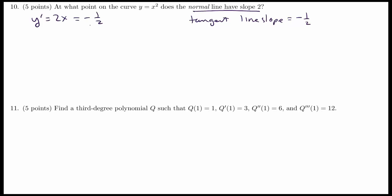2x equal negative 1/2? Well, let's divide both sides by 2. That's going to be when x is equal to negative 1/4. So that's half the answer, that's the x coordinate. Of course we have to find...